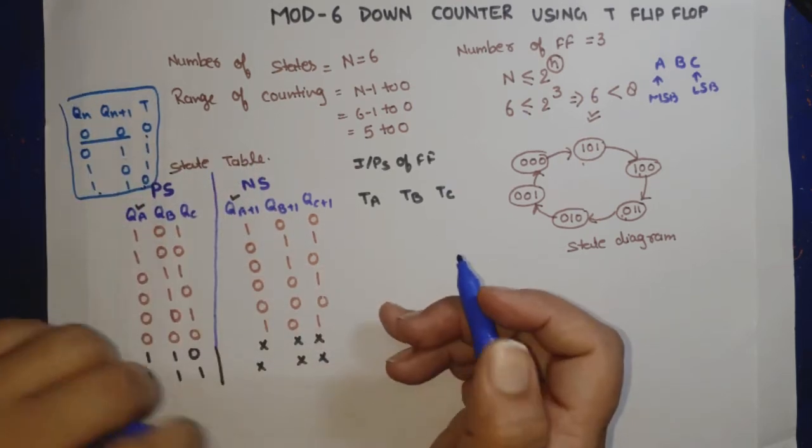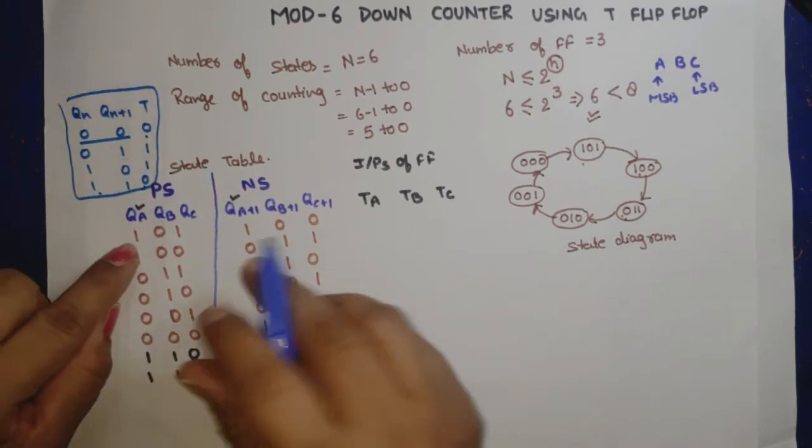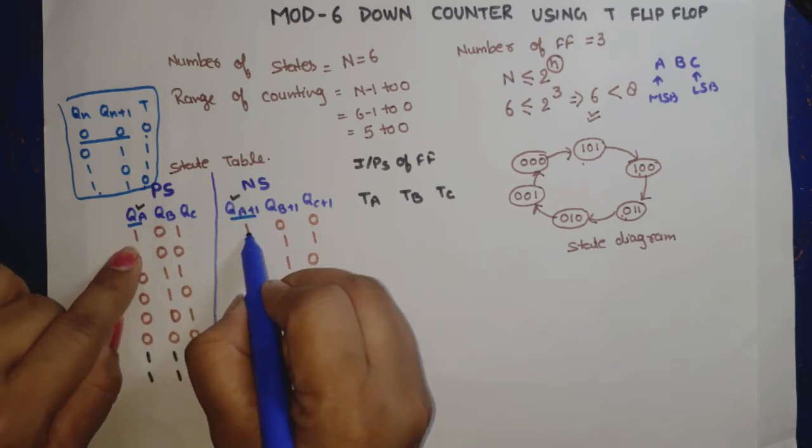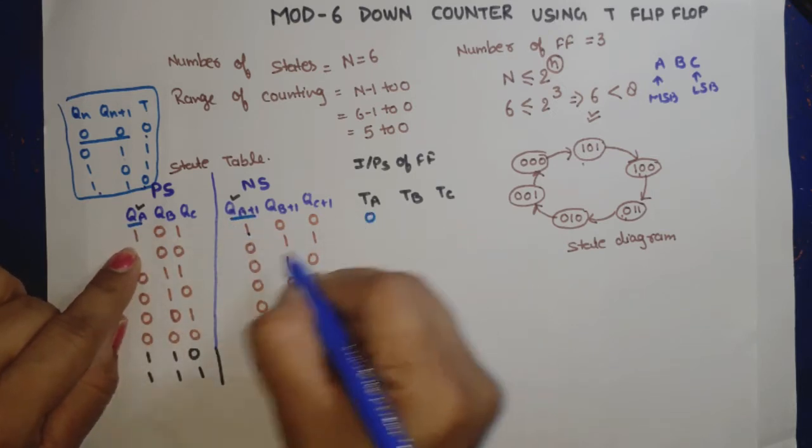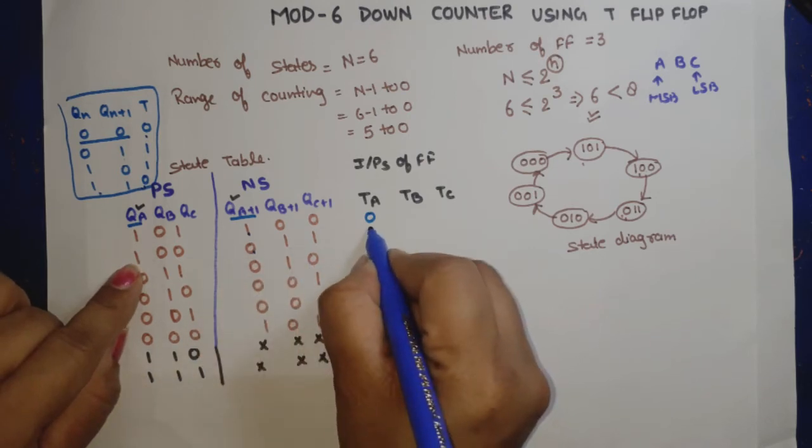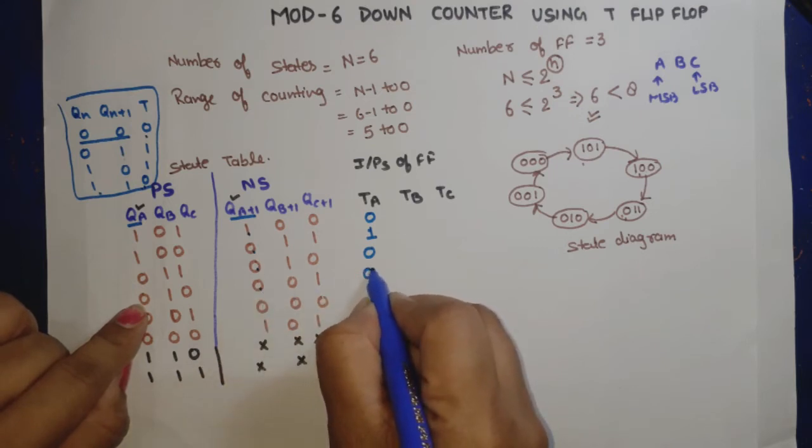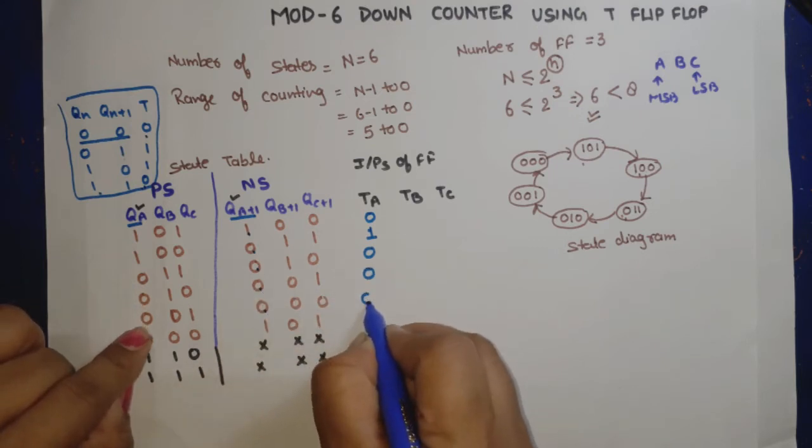When we check for TA value, we compare QA and QA+1. First both are same (1 and 1), so TA is 0. Then 1 and 0, different, so TA is 1. In the remaining cases both are same, so 0, 0, 0. Both are different in one case, so 1. The last two cases are don't care.